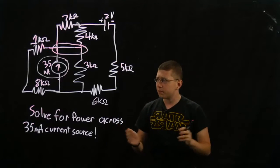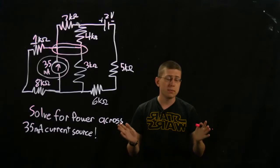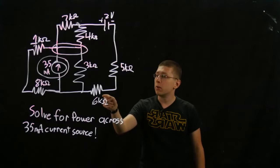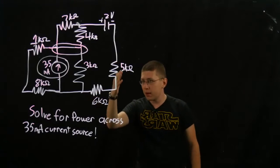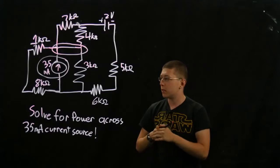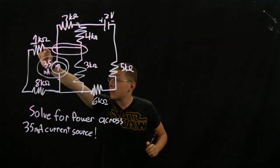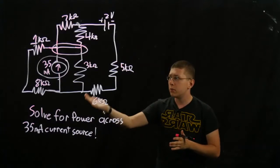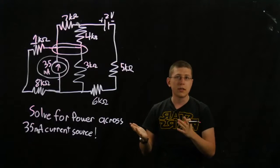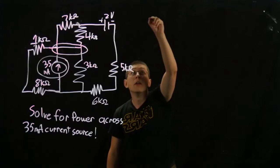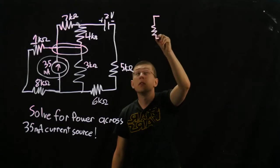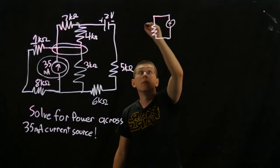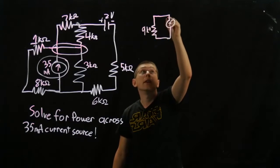So the first thing, with all these resistors, we're going to try to simplify it a bit. You see here the 5k ohm and the 6k ohm — they're in series, connected by the same bus line. Same thing with the 1k ohm and the 8k ohm down there. With simple resistors in series, you just add up the resistances. So I'll redraw it: 1 plus 8 is 9 — nice and simple.